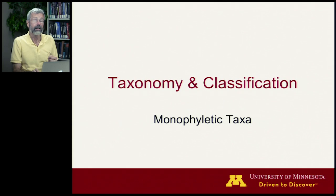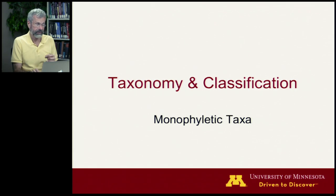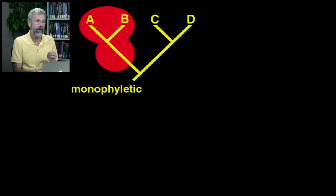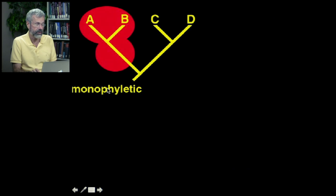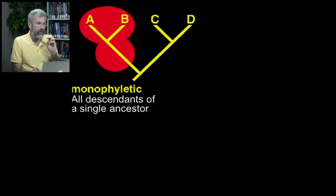We've seen some of the tools used in cladistics for trying to infer evolutionary relationships. The goal of this is to identify monophyletic taxa. Here's an example of a monophyletic classification, outlined by this red area. Species A and B share a single common ancestor — that's the 'mono' in monophyletic — a single common ancestor, and all are descended from that same single ancestor.